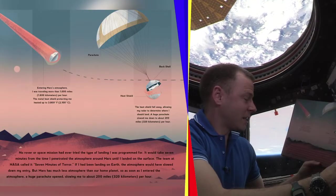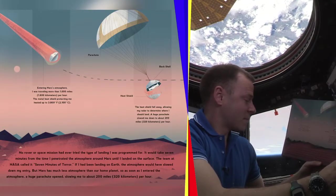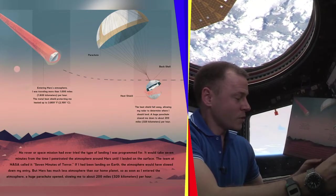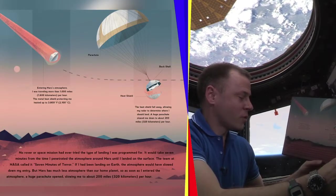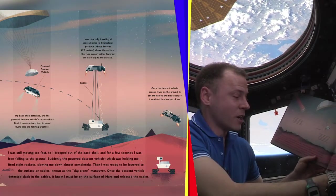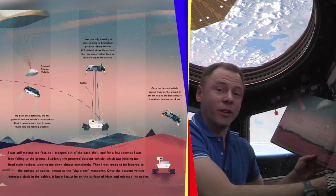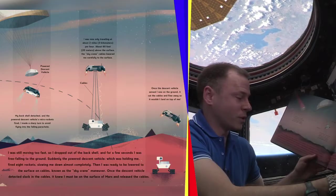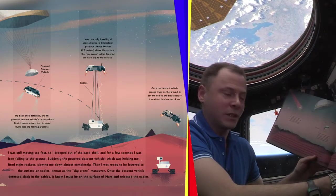If I had been landing on Earth, the atmosphere would have slowed down my entry, but Mars has much less atmosphere than our home planet. So as soon as I entered the atmosphere, a huge parachute opened, slowing me to about 200 miles per hour. I was still moving too fast, so I dropped out of the back shell and for a few seconds, I was free-falling to the ground. Suddenly, the powered descent vehicle, which was holding me, fired eight rockets, slowing me down almost completely.